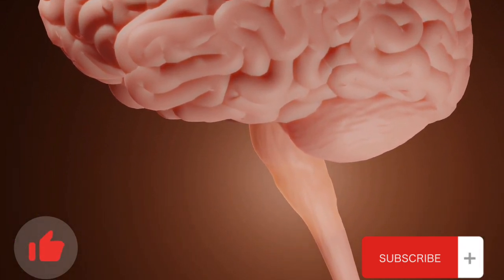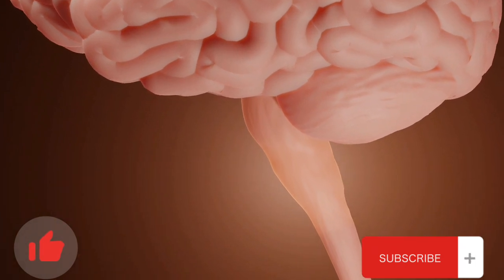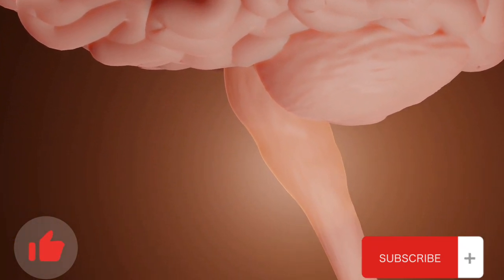Brainstem: includes the medulla, pons, and midbrain, controls basic life functions like breathing and heartbeat.